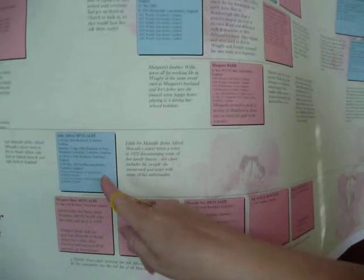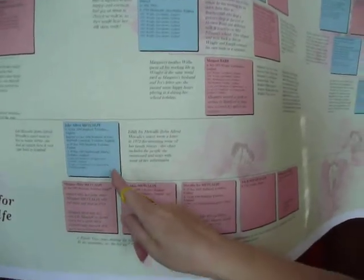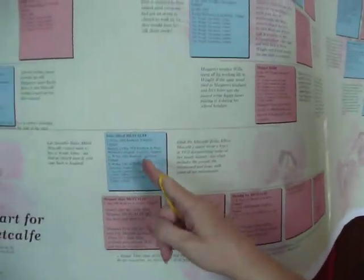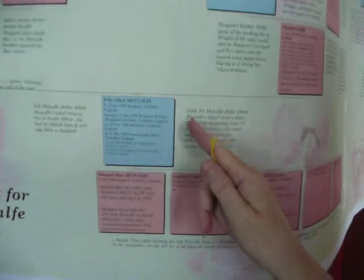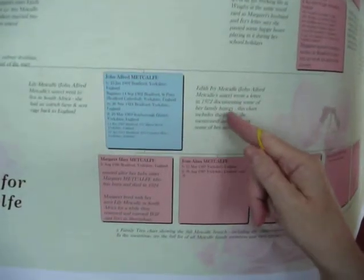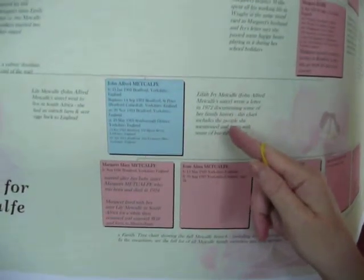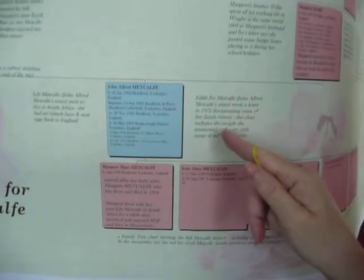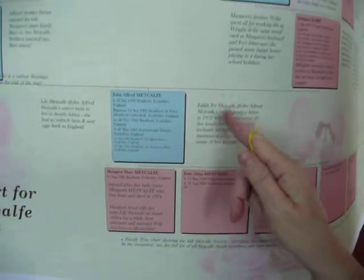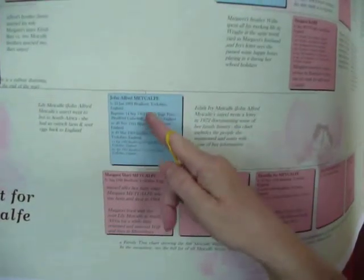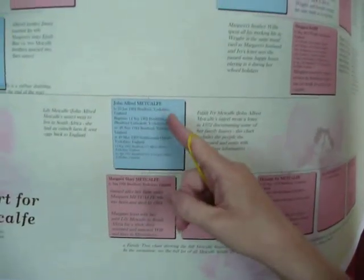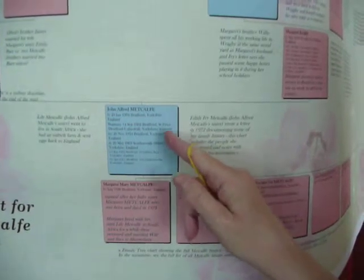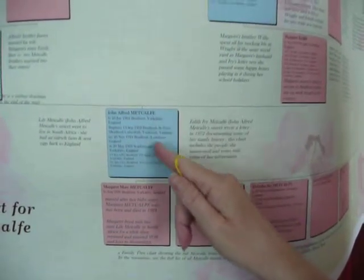Now Dot's dad here, John Alfred Metcalfe — it's his sister Ivy, Aunty Ivy, who wrote the letter in 1972. So here she is — Ivy is Dot's auntie, the sister of Dot's dad.